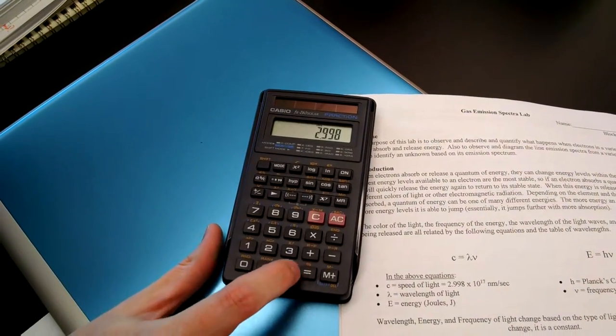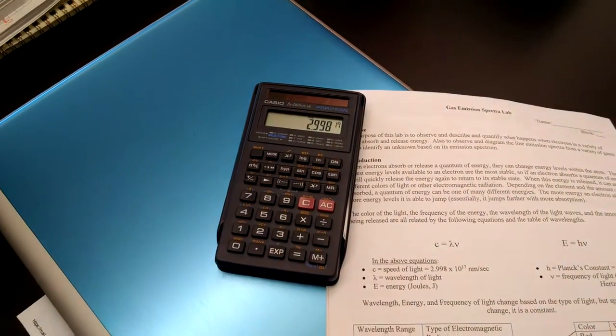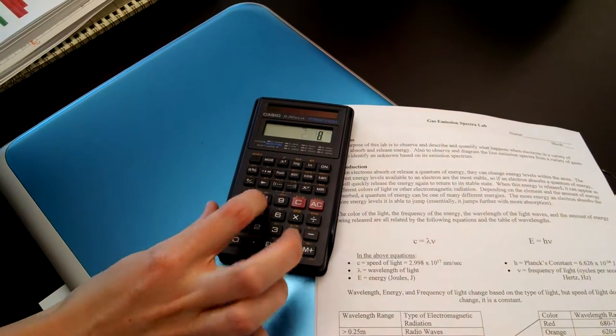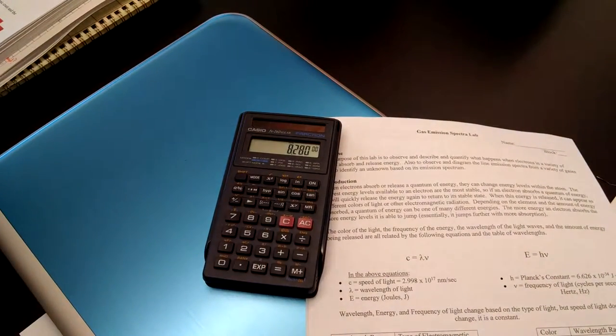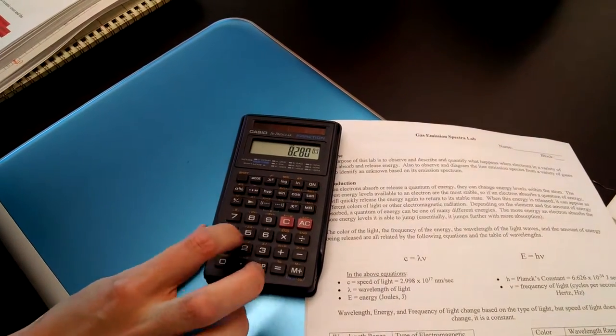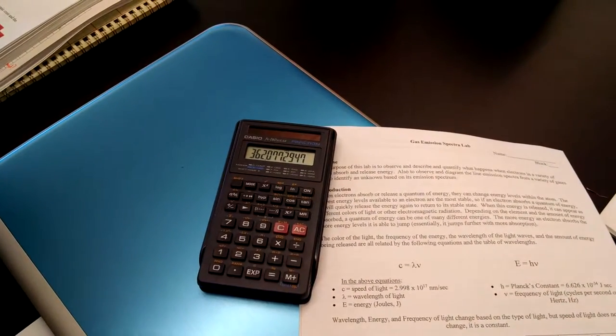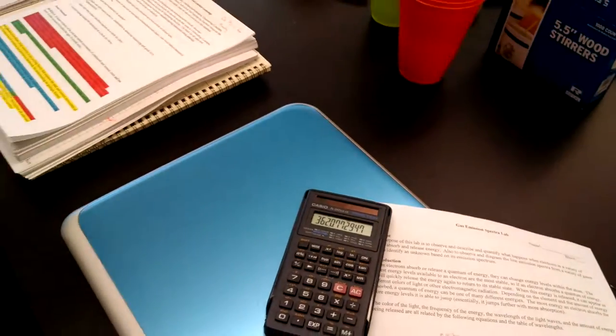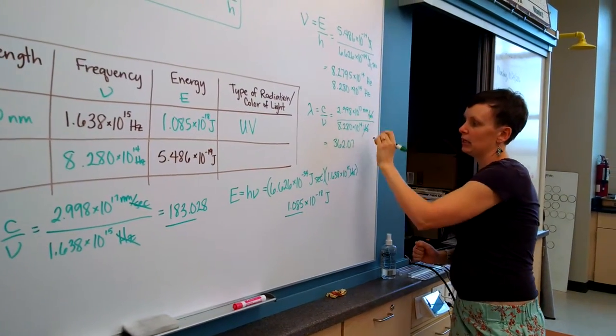2.998 EXP 17, divided by 8.280 EXP 14. We get 362.07, 362.07 nanometers is the unit.